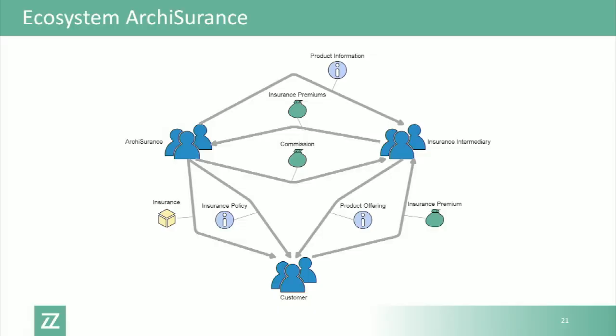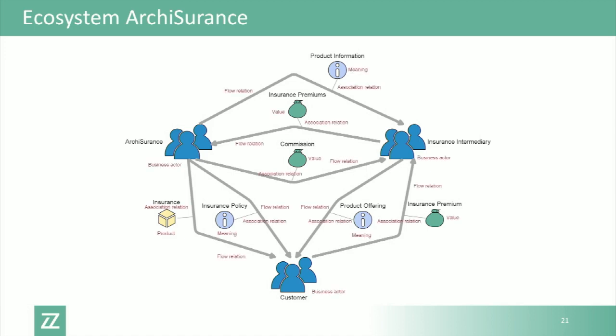Let's start with the ecosystem of Arc Insurance. You see the insurance company itself, customers at the bottom, and insurance intermediaries — it also sells through intermediaries. This doesn't look like an Archimate picture, but actually Archimate concepts are behind this, just visualized differently. It shows flows between parties — who is sending what to whom: product offerings, the products themselves, money flowing. Just an alternative representation for non-technical stakeholders.